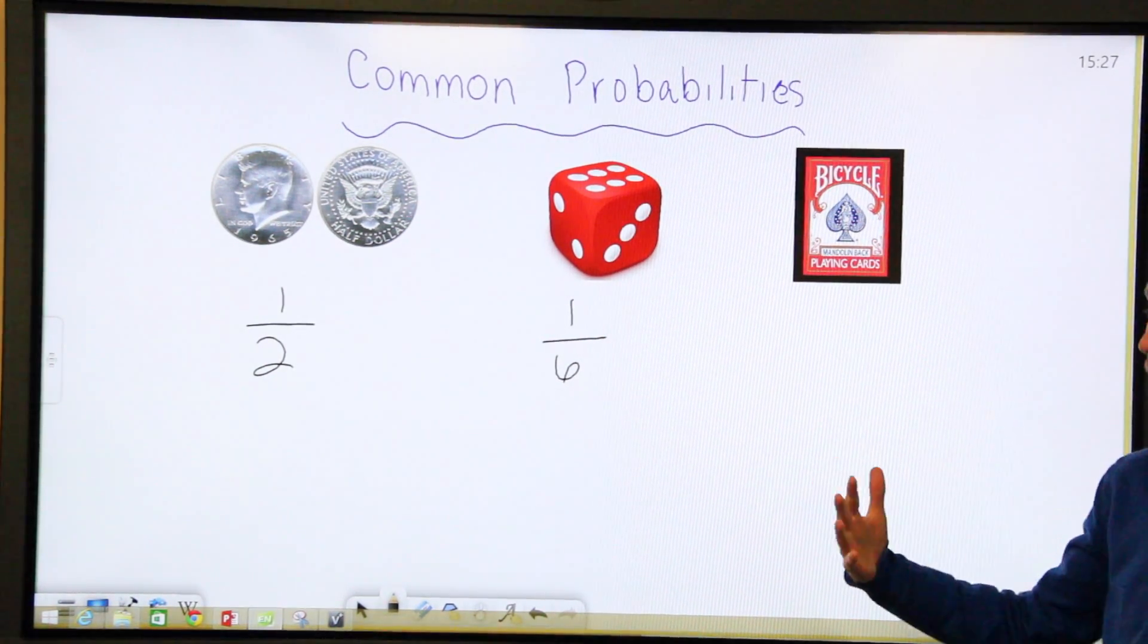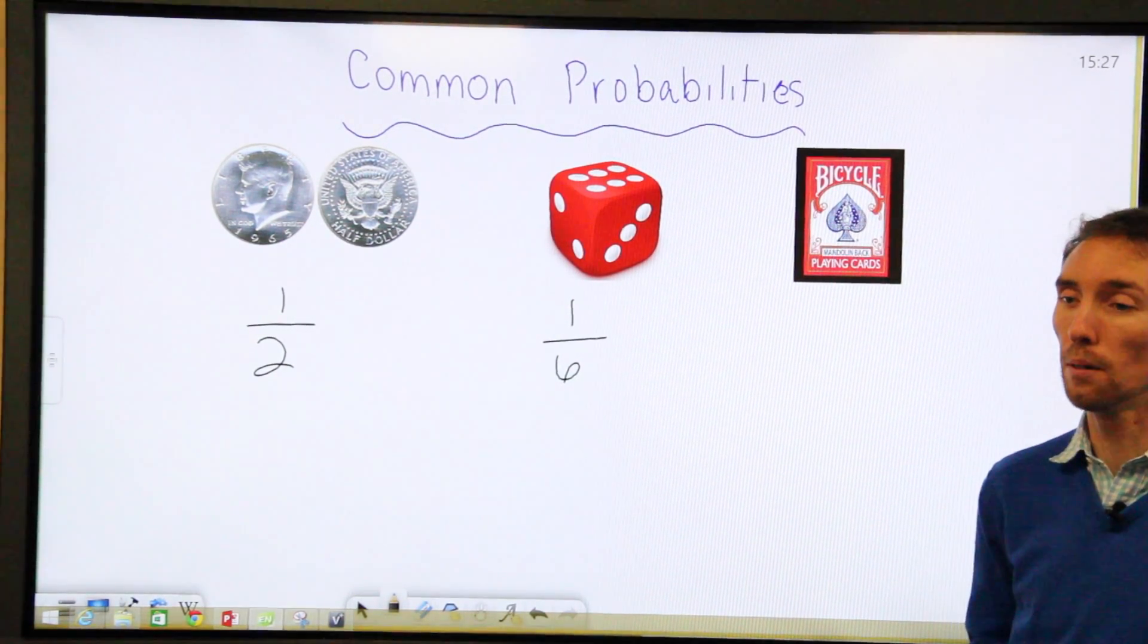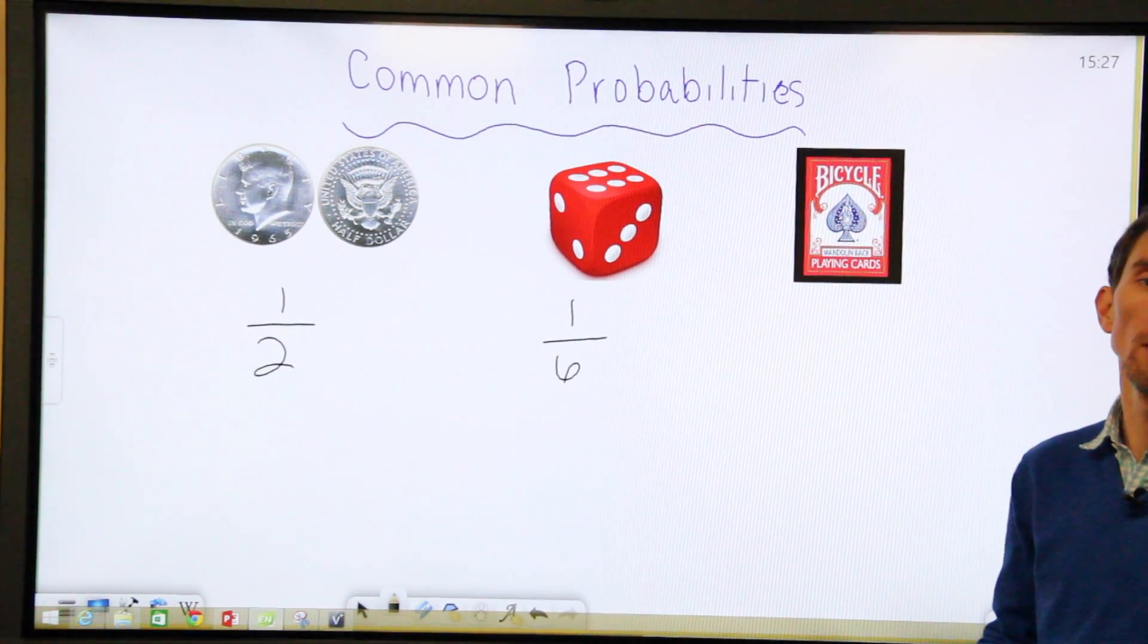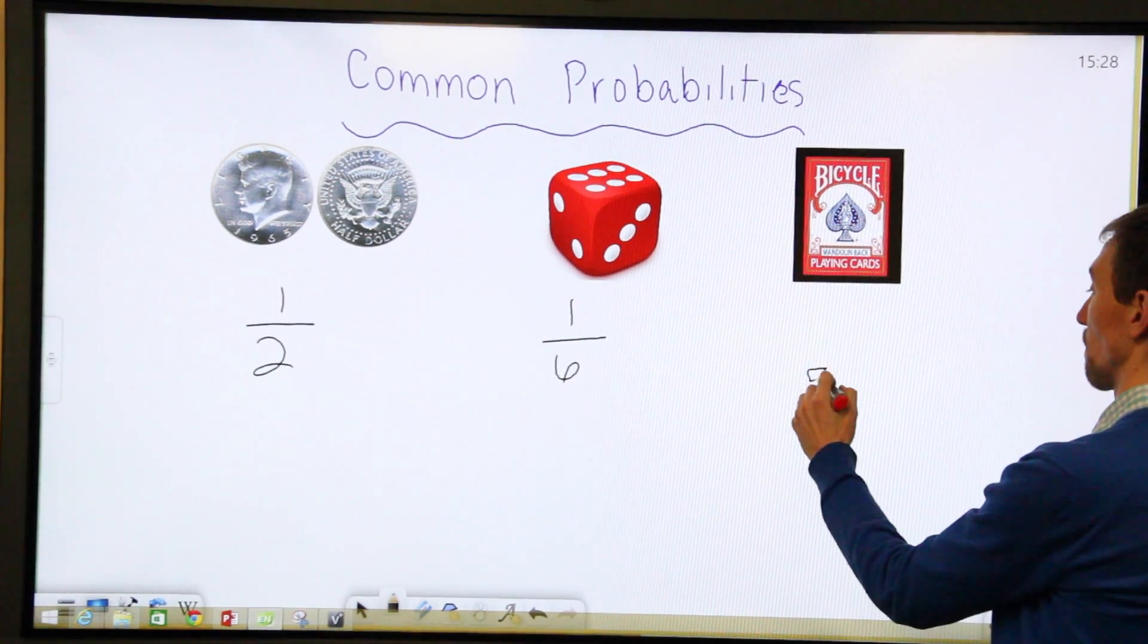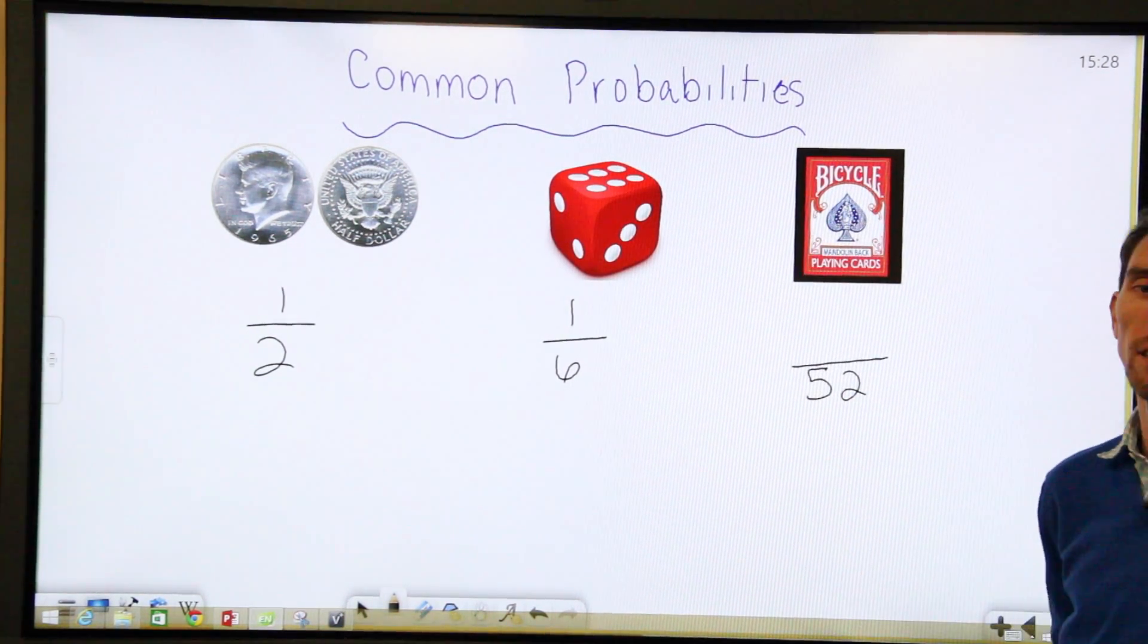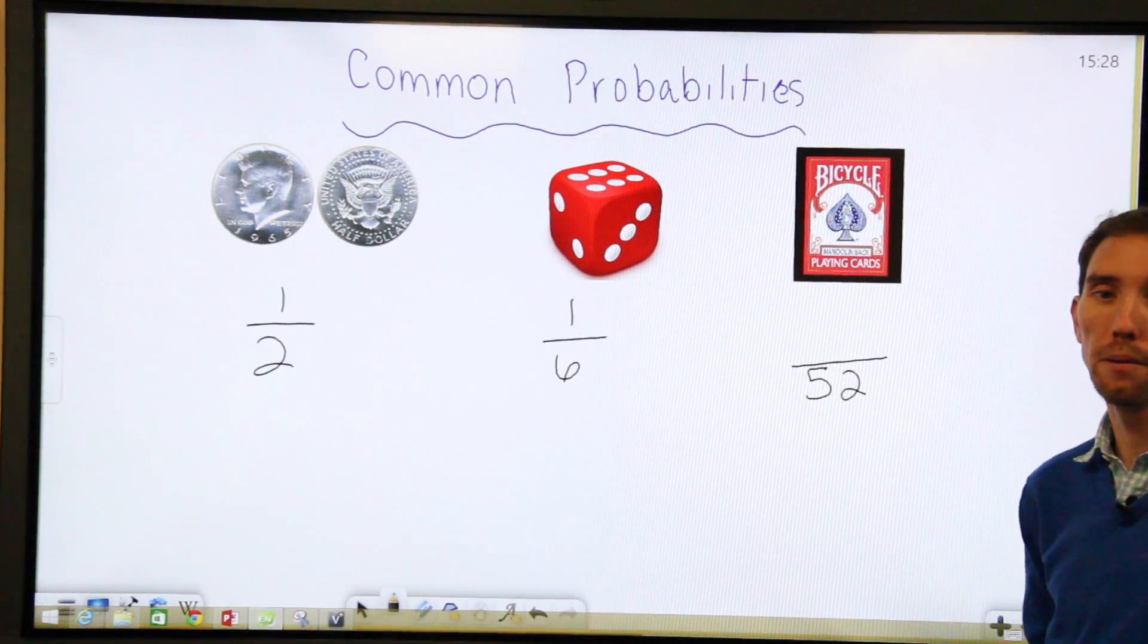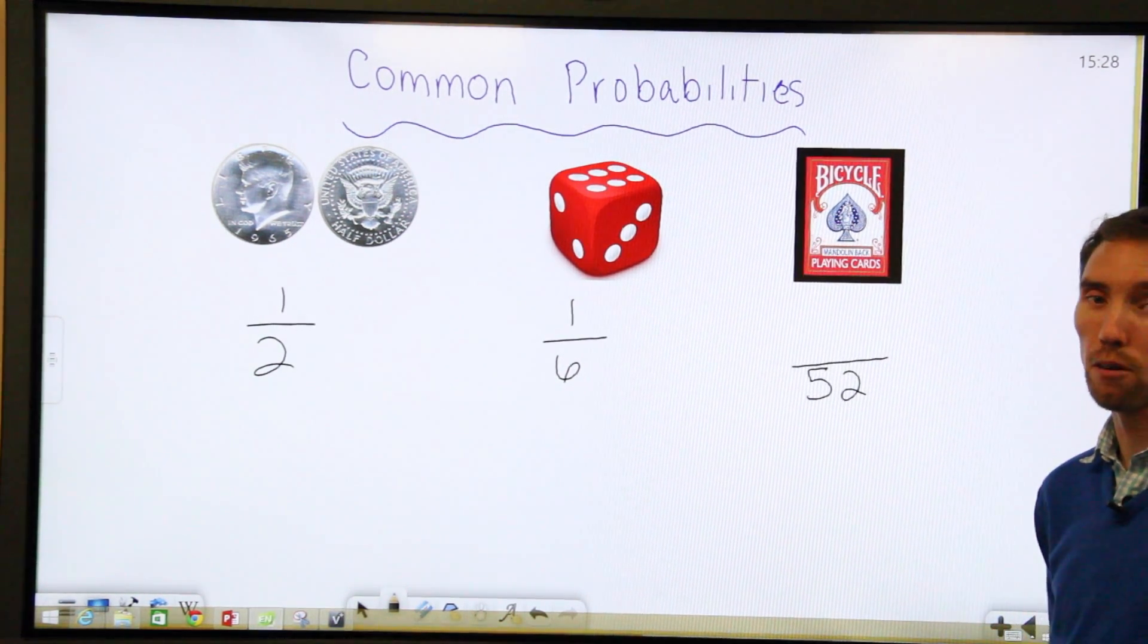With a deck of cards, it's a common thing that you use for probability, because there's a lot of different options. But the big thing is the number of total possible outcomes there are. If you don't know, in a deck of cards, there are 52 different cards. So that should usually be the denominator in your fraction, unless you're reducing it. Things that they would ask you are the probability of picking a suit, like a diamond, a club, a spade, or a heart.